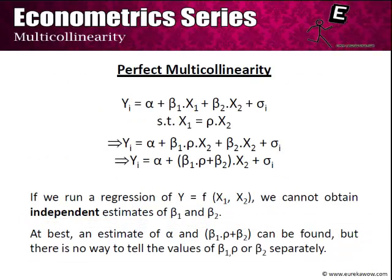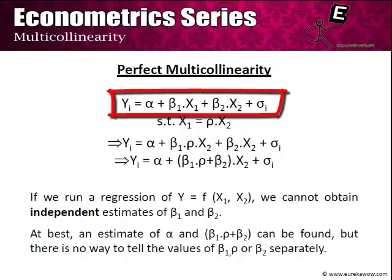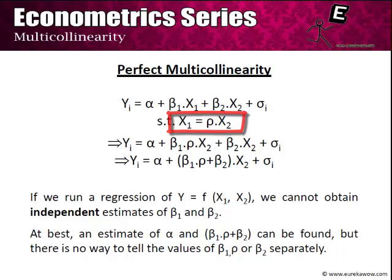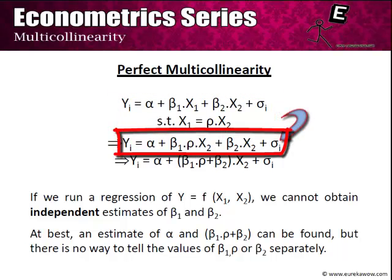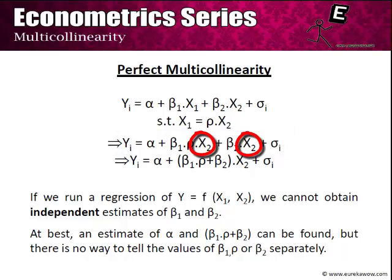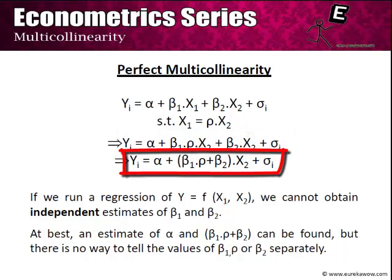This is the problem of perfect multicollinearity. Suppose the population regression function was yi = α + β1·x1 + β2·x2 + σi, such that x1 = ρ·x2 — that is, there is an exact linear relationship between x1 and x2. Substituting this value of x1, we get yi = α + β1·ρ·x2 + β2·x2 + σi. Taking x2 common: yi = α + (β1·ρ + β2)·x2 + σi.